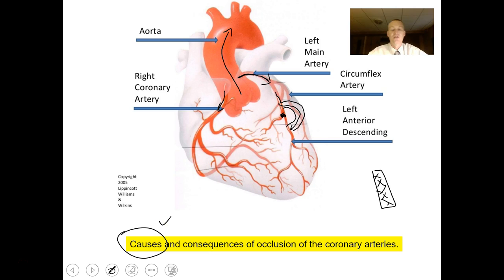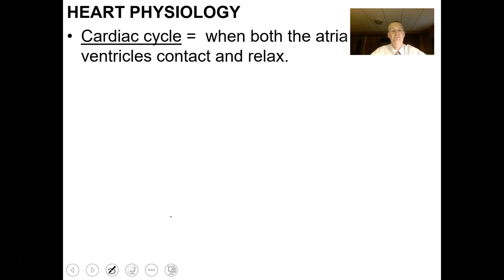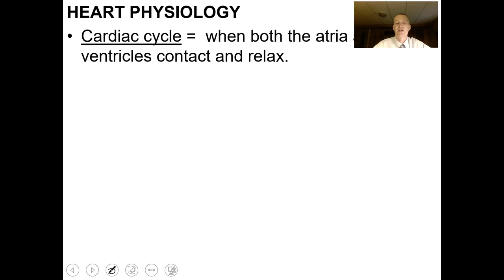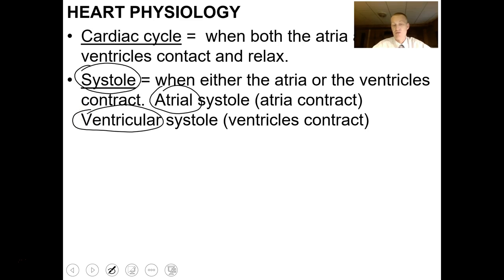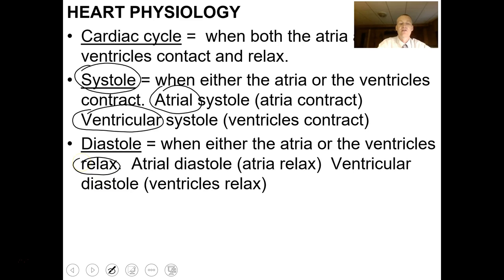Some people are genetically predetermined to have blocked arteries because they naturally produce a lot of cholesterol. The cardiac cycle occurs when the atria and ventricles contract and relax. When the atria or ventricles contract, that's called systole — atrial systole and ventricular systole. Asystole is when there's no contraction and you're dead. Diastole is when the atria or ventricles relax — atrial diastole and ventricular diastole.